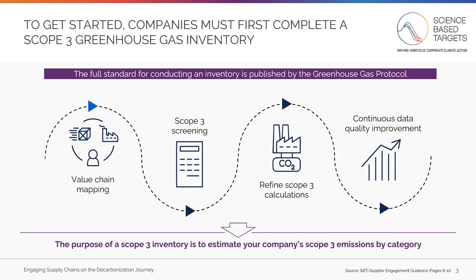Step 1 is to complete a value chain mapping exercise. You should list all upstream and downstream activities and map them to the Scope 3 categories defined in the Greenhouse Gas Protocol's standards. Step 2 is to conduct a Scope 3 screening, which provides an initial emissions estimate across Scope 3 categories.